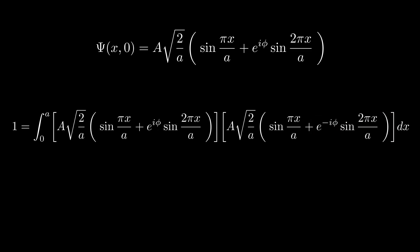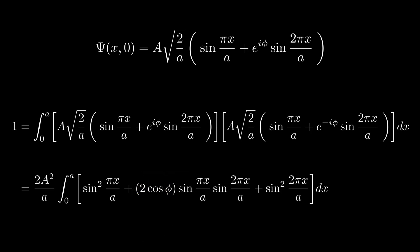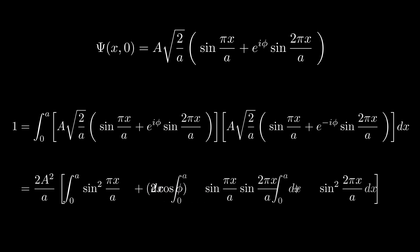With this in place, we're ready to expand the expression and evaluate the integral. Let's take a closer look at this term: e^(iφ) plus e^(-iφ). This is a well-known identity from Euler's formula, which tells us that the sum of these two exponentials is simply 2 times cosine of phi. At this point, our normalization equation simplifies to a sum of three separate integrals.